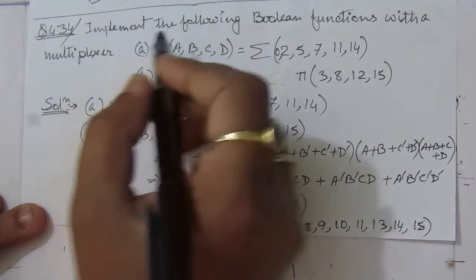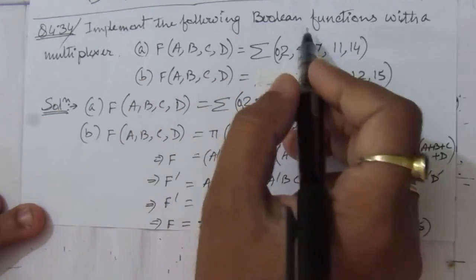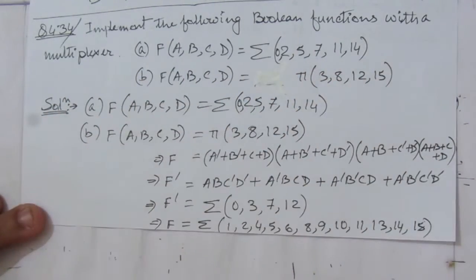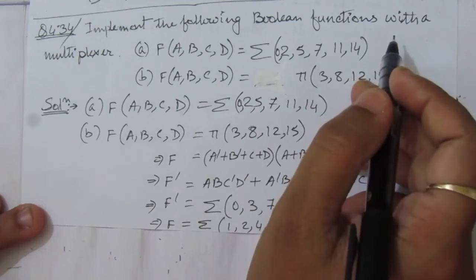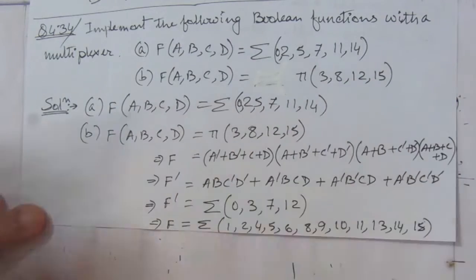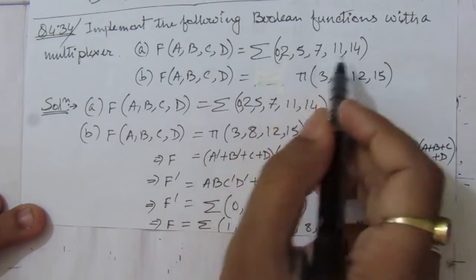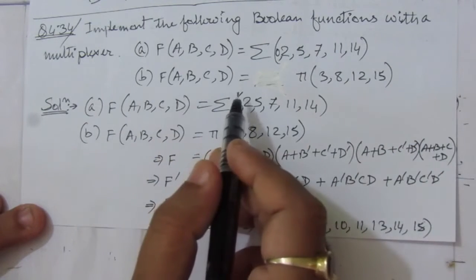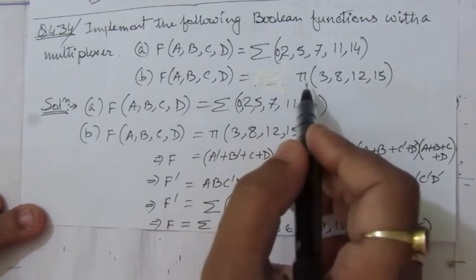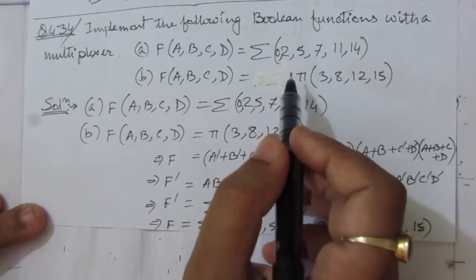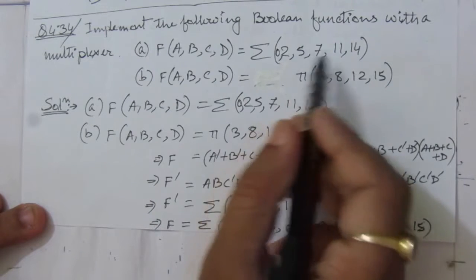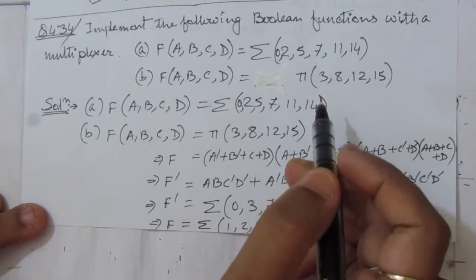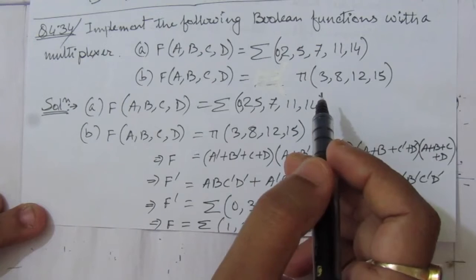The problem is: implement the following Boolean functions with a multiplexer. That means we have to use a multiplexer to realize these Boolean expressions. The first expression is a sum of minterms expression and the second expression is a product of maxterms expression. Let us write both of these in sum of minterms form first, to realize with a multiplexer.